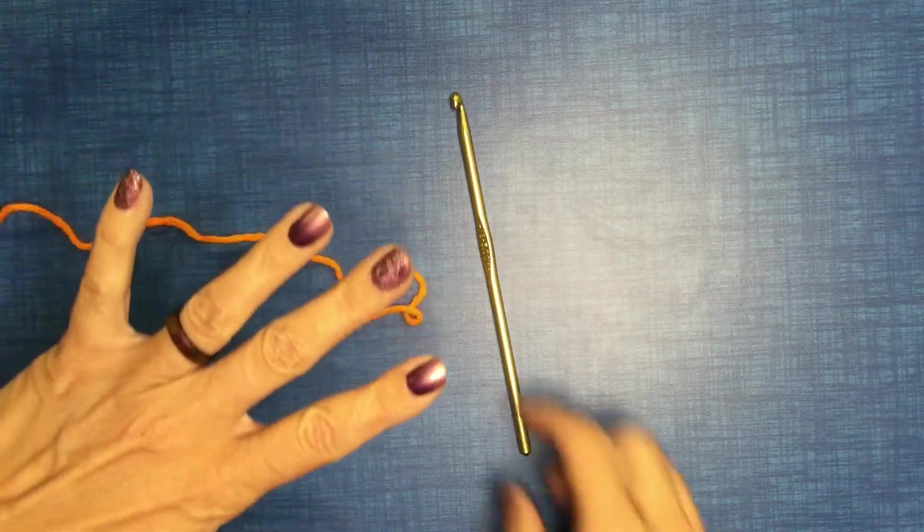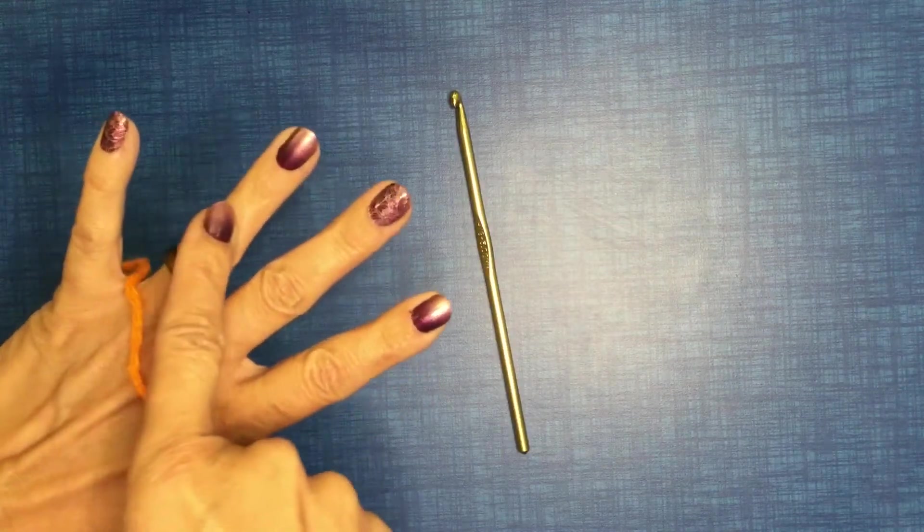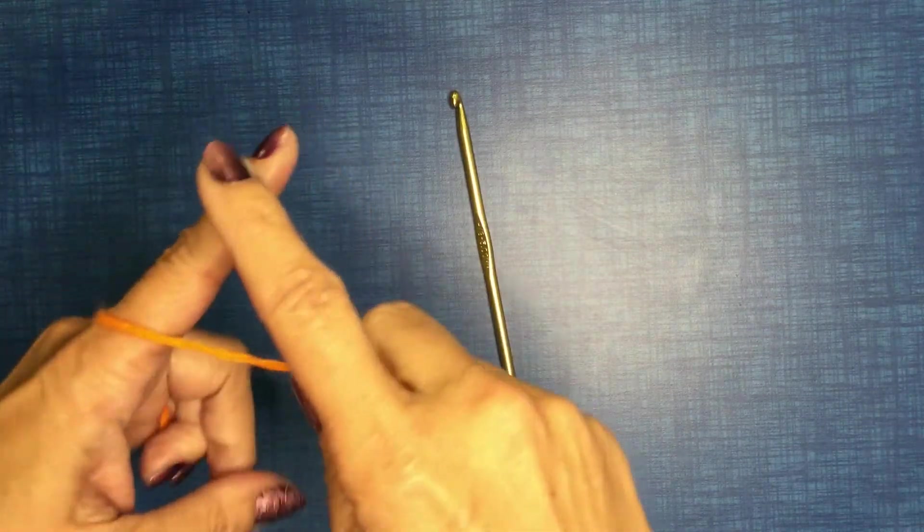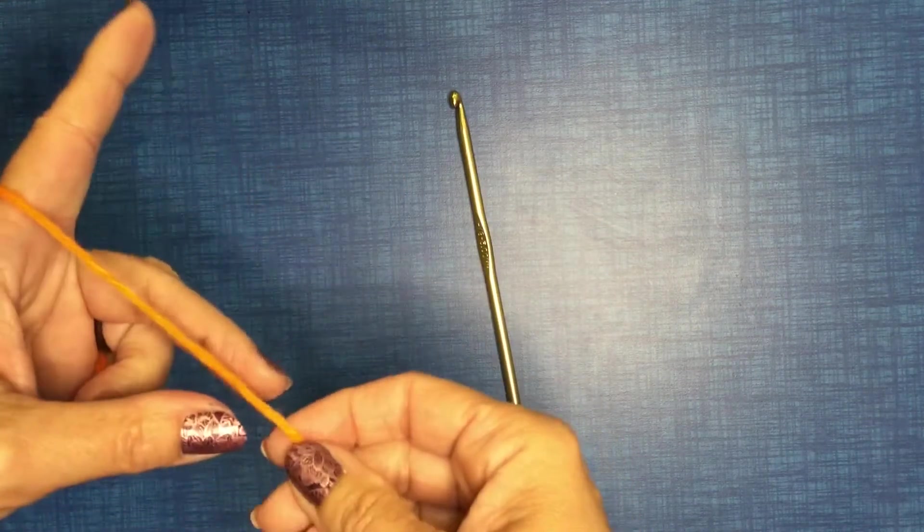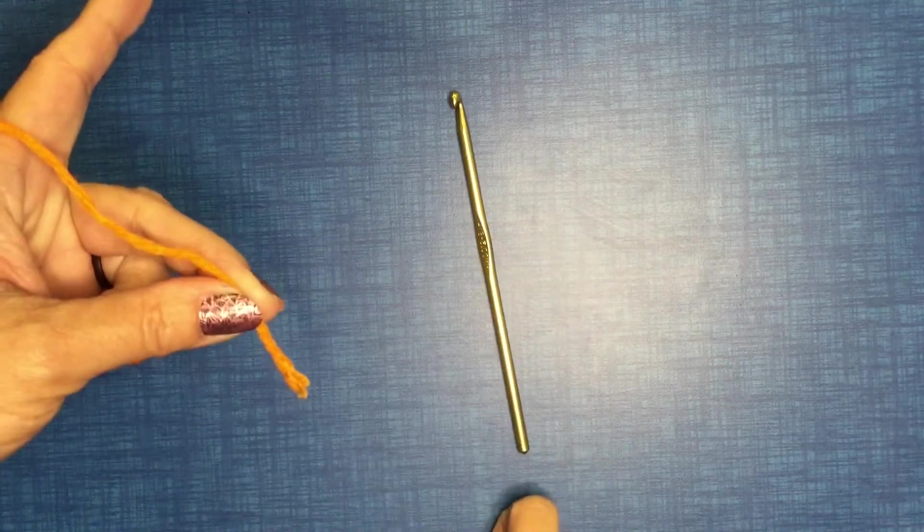So we're going to put the yarn between our pinky and our ring finger. Remember up over our pointy finger and we hold it between our thumb and our middle finger.